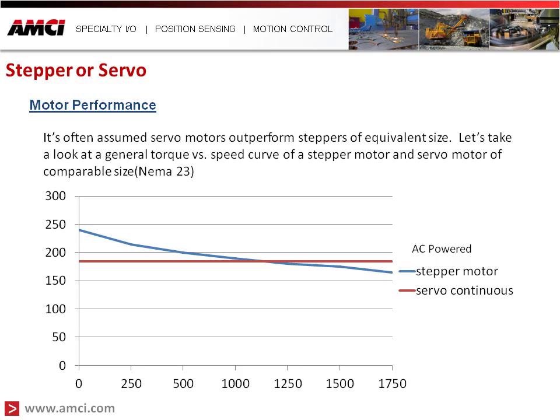Motor performance. It is often assumed servo motors outperform steppers of equivalent size. But if we look at the general speed-torque curves of both motors, we can see that a stepper motor and a servo motor actually have very similar performance at speeds up to and around 1,000 RPM and above. For those familiar with servos who avoid steppers thinking their performance is much less, the speed-torque curve shows that if your operating speed is around 1,500 RPM or below, a stepper motor can actually be a pretty good fit.